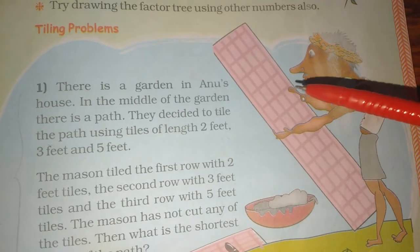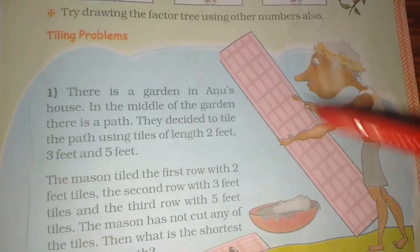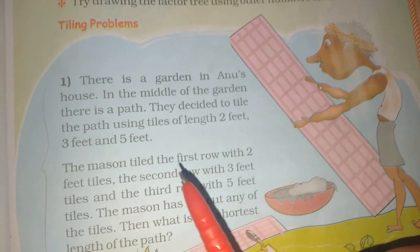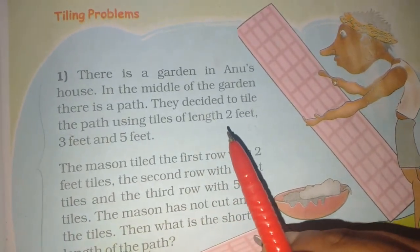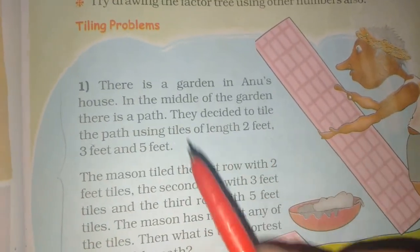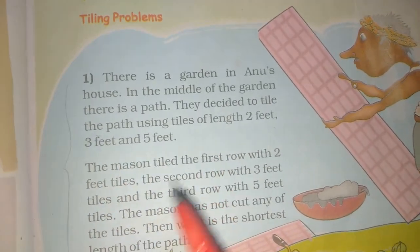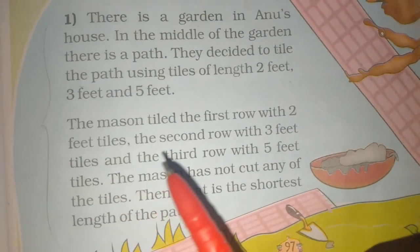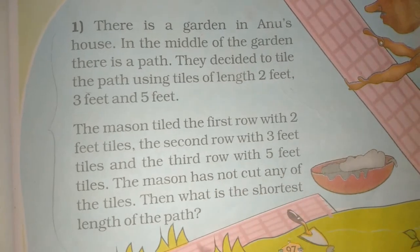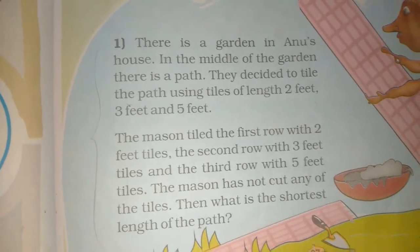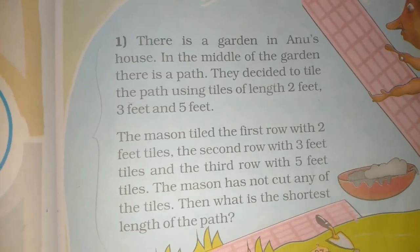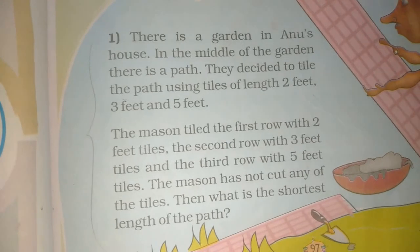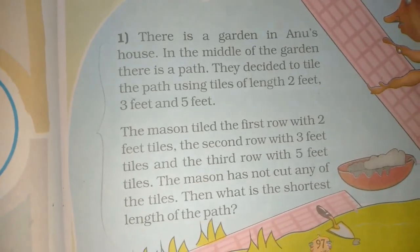Now, this is Anuj's garden. The mason tiles the first row with 2 feet tiles, the second row with 3 feet tiles, and the third row with 5 feet tiles. The mason has not cut any of the tiles, and we need to keep the tiles uncut as well.